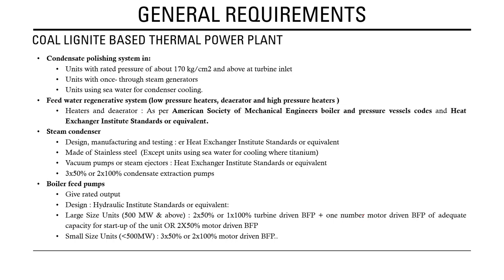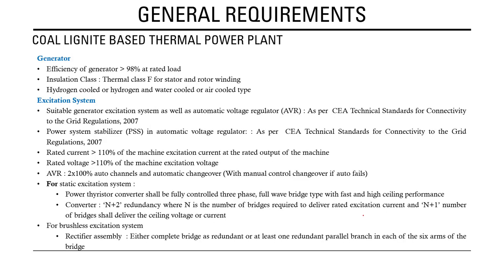For generator efficiency and excitation systems, the generator efficiency should be more than 98 percent at rated load. The insulation class for stator and rotor winding should be thermal class F. Generators should be hydrogen-cooled, water-cooled, or air-cooled. A suitable excitation system and automatic AVR must comply with the CEA technical standard for connectivity to the grid regulation 2007. The AVR must also have power system stabilizer (PSS) capability for damping oscillations.